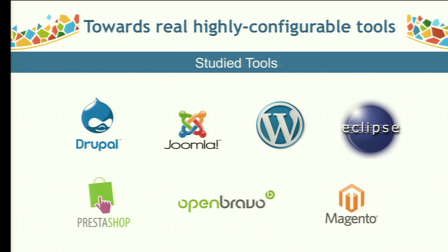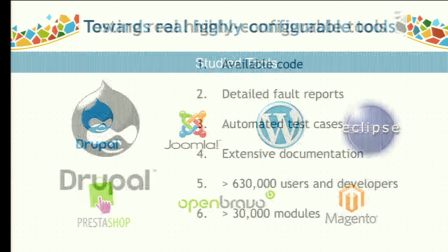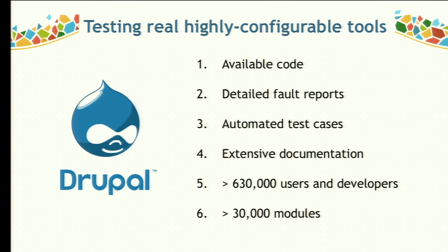Interestingly, among all the tools considered in our study, only one of them meets all the expectations. Drupal. Drupal has available code, detailed fault reports with severity and full descriptions, access to the bug tracking system, automated test cases for most modules, and extensive documentation. Together with a community of more than 630,000 users and developers, this made us choose Drupal as our case study. Also, Drupal has more than 30,000 modules, making it a variability-intensive system.